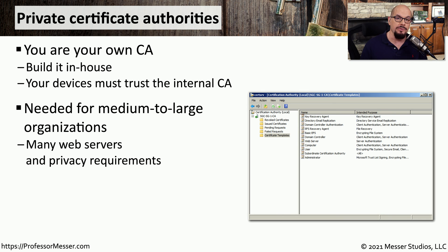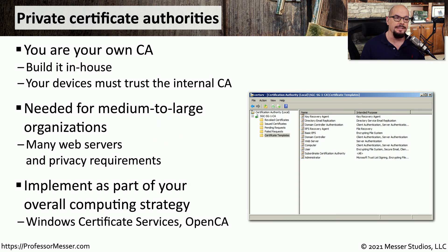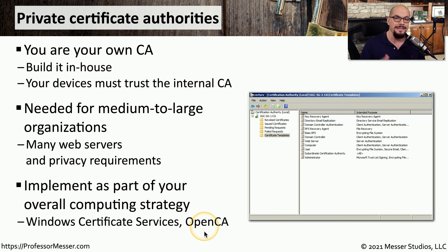It's certainly much easier to build your own certificates internally and sign them yourself than sending them out to a third party, and it's also less expensive because we don't have to pay for a third party to do that. Having an internal CA is almost a requirement if you're a medium to large-scale organization with hundreds of different servers, and you need to provide signed digital certificates for every single one of those servers. In Windows, you have Windows Certificate Services, and in Linux and other operating systems, you can use software such as OpenCA.